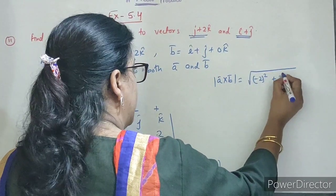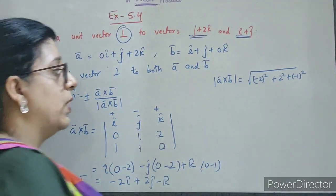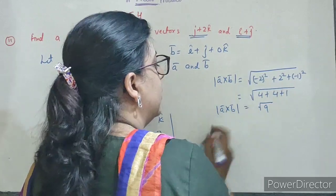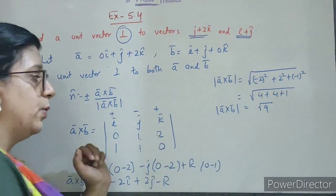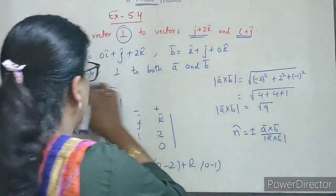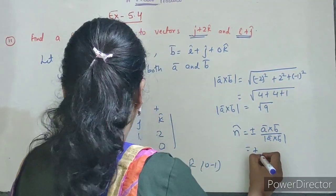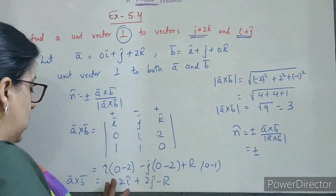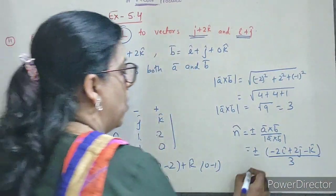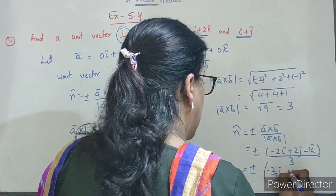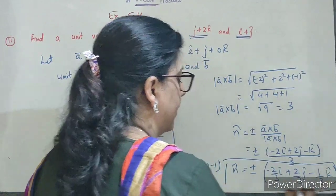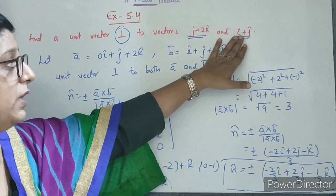Root 9 = 3. So n̂ = plus or minus A cross B upon mod of A cross B. A cross B aa gaya, uska magnitude bhi aa gaya. To n̂ = plus or minus (−2î + 2ĵ − k̂) / 3. Or you can write: plus or minus (−2/3 î + 2/3 ĵ − 1/3 k̂). This is the answer — the unit vector which is perpendicular to both of these vectors.